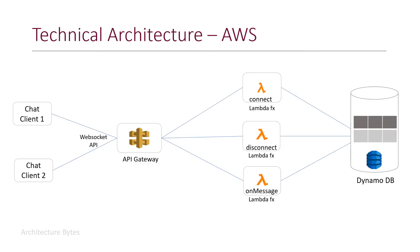Now that we have seen individual components of the architecture, let's look at the overall architecture one more time. Let's look at the connect flow: chat client one sends a connect request to the API Gateway, the API Gateway invokes the connect Lambda function, which in turn inserts a record into the DynamoDB table and sends a message to all other chat clients about the availability of this new user.